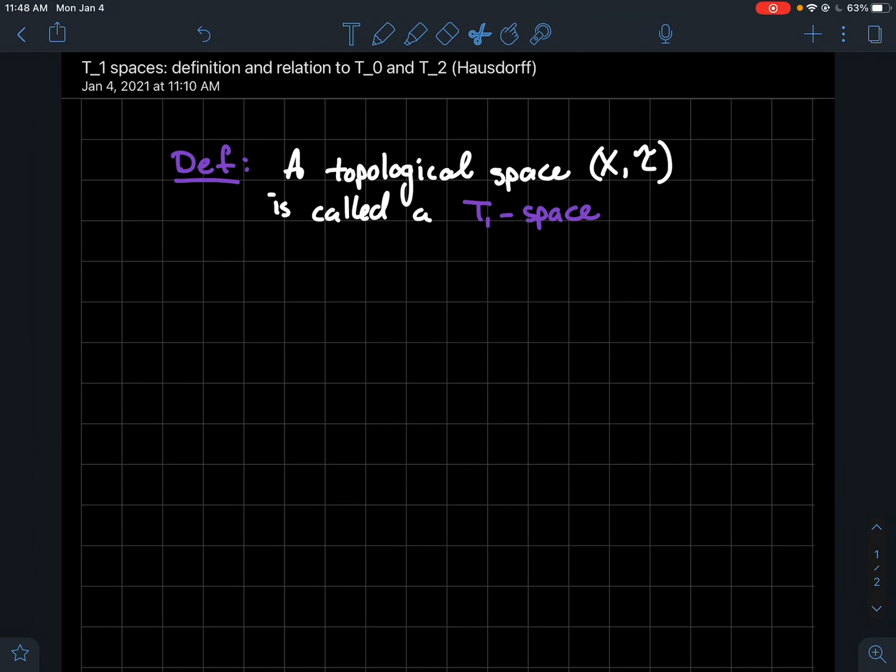In this video we're going to talk about T1 spaces. In particular we'll start with the definition and then we'll look at its relationship to T0 spaces and T2 spaces. By the way, T2 space is the same thing as a Hausdorff space. So you should go check out the video that I made on Hausdorff spaces and the one I made on T0 spaces to be up to speed with what we're going to talk about in this video.